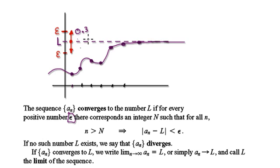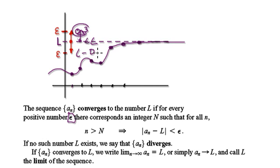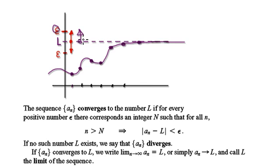So let's say epsilon is 0.3, so it can be L plus 0.3 or L minus 0.3. So this epsilon is basically L plus epsilon and L minus epsilon here.